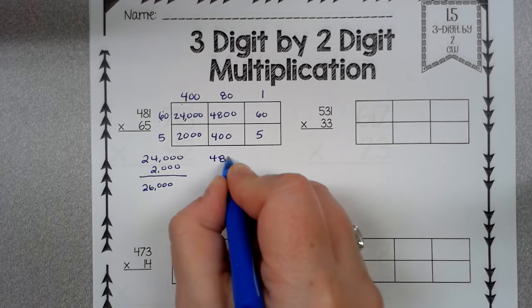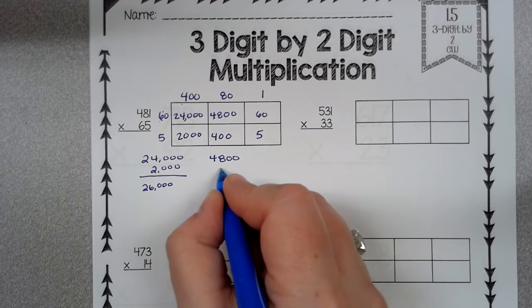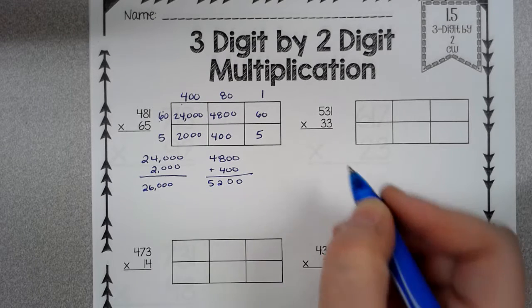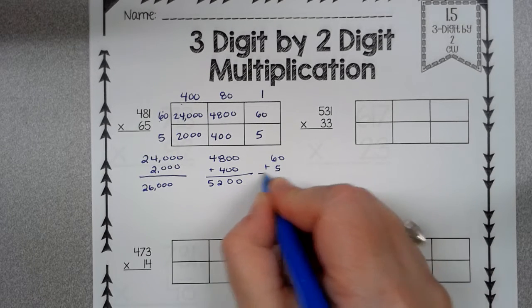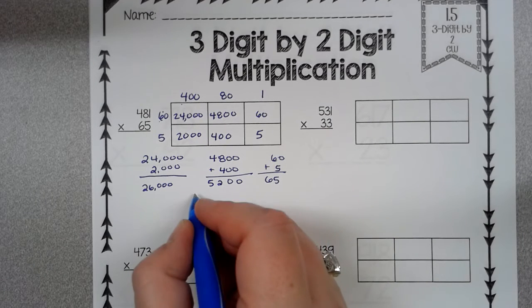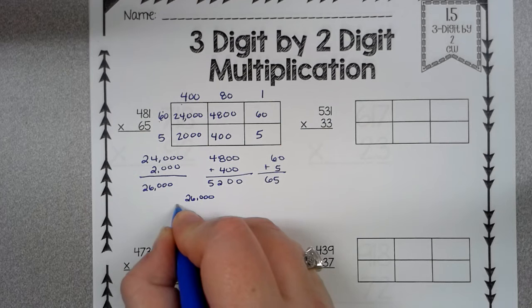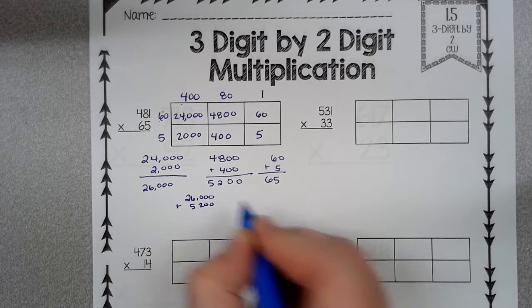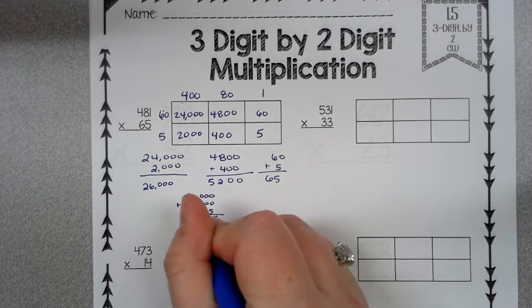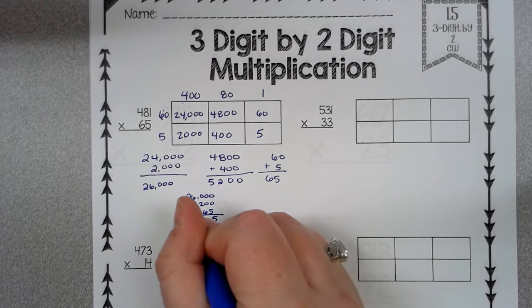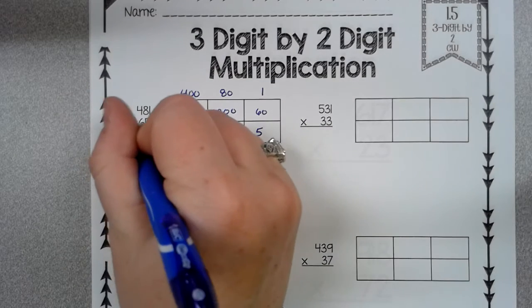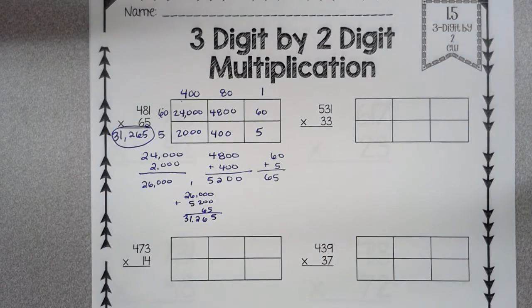Okay. 4,800 plus 400, that's 5,200. And 60 plus 5 is 65. So now I'm going to add these up. 26,000 plus 5,200 plus 65. And I'm going to write this. 31,265. Just like that.